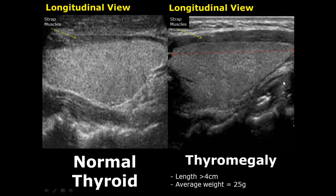Another term commonly used for thyromegaly is goiter, which is also the abnormal enlargement of the thyroid gland. This can be due to many reasons such as nodular hyperplasia, cancer, or thyroiditis — we will see all these cases now.